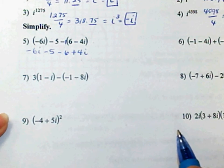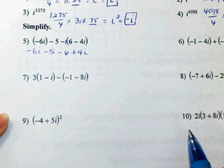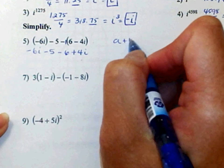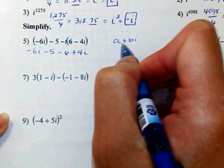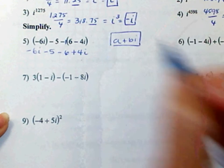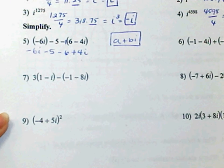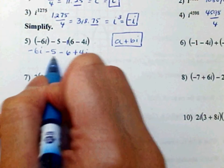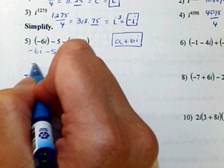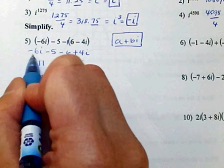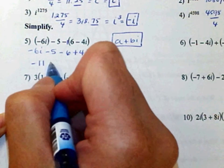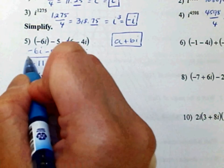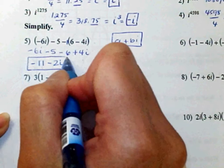Combine your like terms. Remember we want to write it in the format of a plus bi — that's the format you always want, real numbers first. Negative 5 minus 6 gives you negative 11. Negative 6i plus 4i gives you minus 2i. And there you have it.